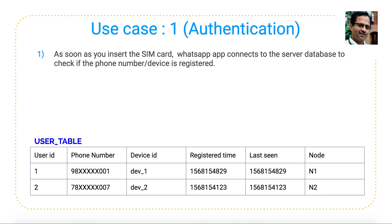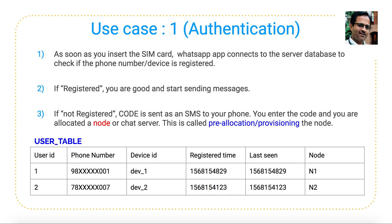What happens here is your WhatsApp connects to the backend server to check if your device is already registered. If it is already registered, you're good and can start sending messages. If you are a first-time user and your device is not registered in the WhatsApp server, the backend server will send you a code as an SMS. You then enter that code into the device and submit it.